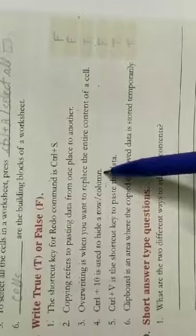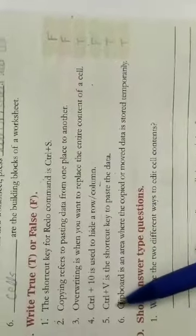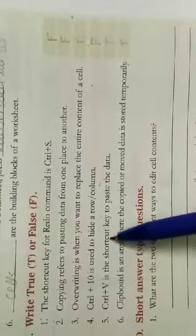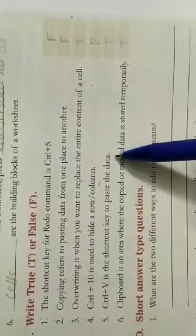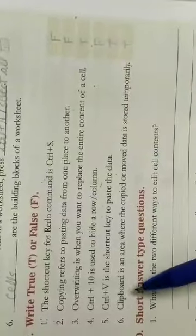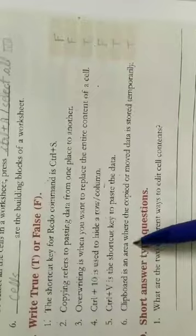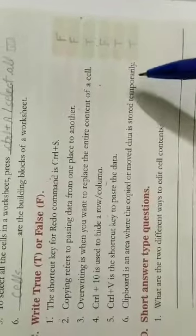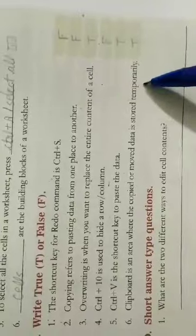column, so this is false. Fifth one: Control plus V is the shortcut key to paste the data. This is true. Sixth one: Clipboard is an area where the copied or moved data is stored temporarily. This is